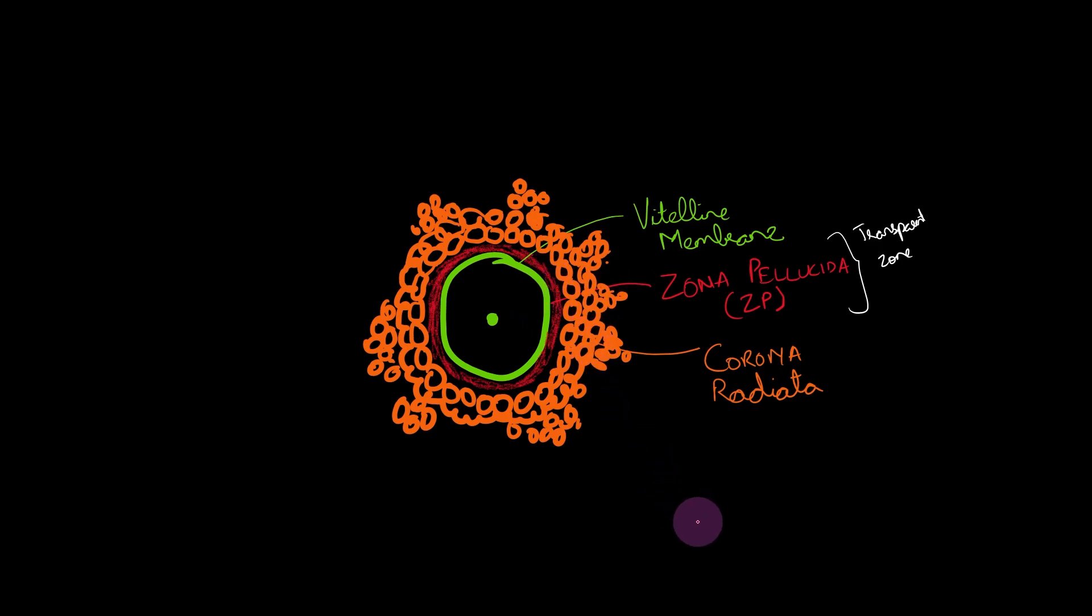This order is very important because from the outside a sperm will have to penetrate these three layers. The corona radiata first, then the zona pellucida and then the vitelline membrane in order to complete the fertilization. These are the three phases of fertilization. So these layers are very important. And of this, zona pellucida is the transparent non-cellular layer.